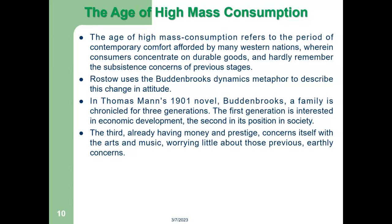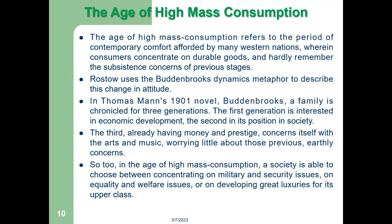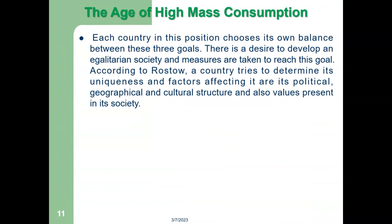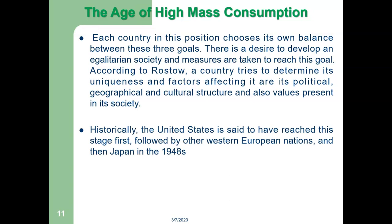So, in the age of high mass consumption, a society is able to choose between concentrating on military and security issues, on equality and welfare issues, or on developing great luxuries for its upper class. Each country in this position chooses its own balance between these three goals. There is a desire to develop an egalitarian society and measures are taken to reach this goal. According to Rostow, a country tries to determine its uniqueness, and factors affecting it are its political, geographical, and cultural structure, as well as values present in its society. Historically, the United States is said to have reached this stage first, followed by other western European nations and then Japan in the 1950s.